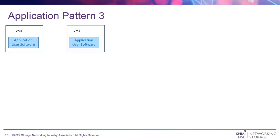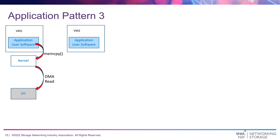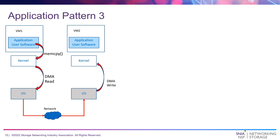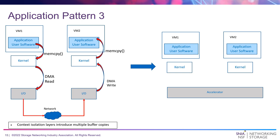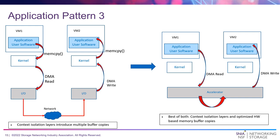A third use case: two virtual machines wanting to perform data movement to each other's address spaces. Today you'd perform a memory copy into a kernel buffer, the kernel uses an I/O device for a DMA read, the data goes through a network, another DMA write goes to a kernel buffer, then a memory copy into the second VM's user buffer. This can be optimized with an accelerator that safely and securely reads the data buffer from one guest VM, and writes it into a second virtual machine — the best of both worlds: context isolation preserved plus optimized buffer copies.